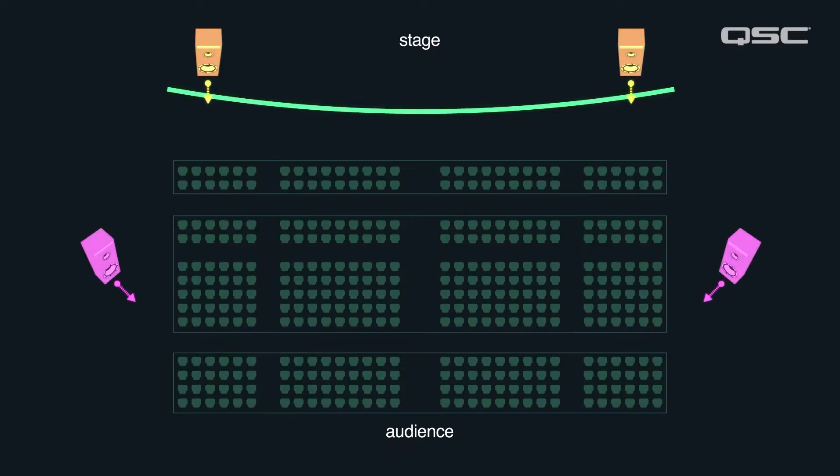Anytime you place loudspeakers at different distances, either vertically or horizontally, you will need to delay the loudspeakers that are closer to the audience, so that their arrival time at the listener is consistent with the sound coming from the main loudspeakers. If you don't, the sound coming from the closer loudspeakers will arrive at the ears of the listeners before the sound from the main loudspeakers, causing a distinct lack of clarity and intelligibility for the people listening to those loudspeakers in the back.